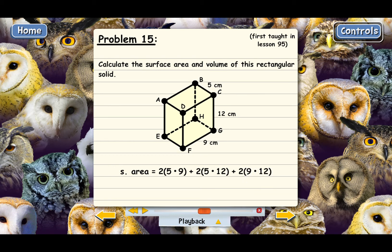Now let's simplify by multiplying inside the parentheses, and that gives us 45, 60, and 108. Then we'll multiply each of those by 2, which gives us 90 plus 120 plus 216. Adding those up, we get 426. Since the dimensions are in centimeters, this has to be square centimeters. So 426 square centimeters is the surface area of this rectangular solid.